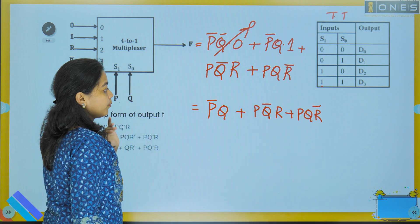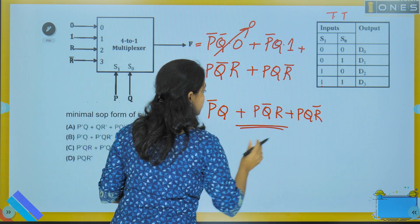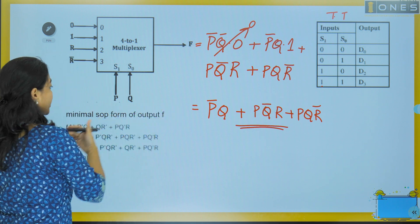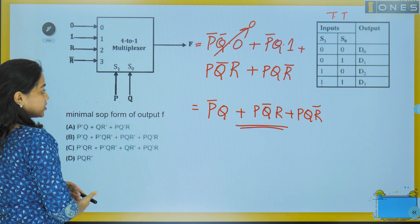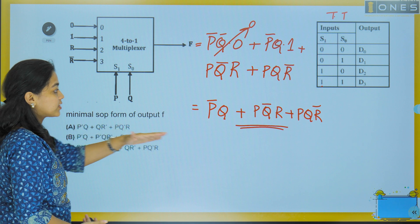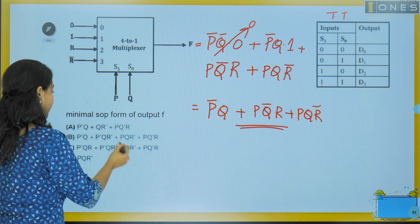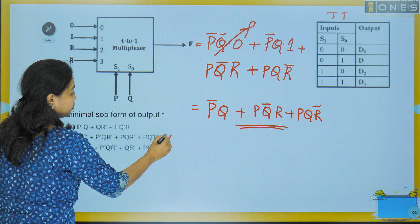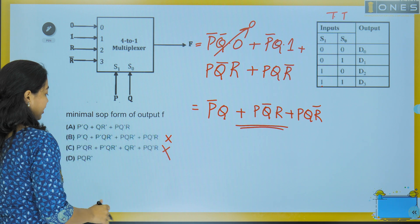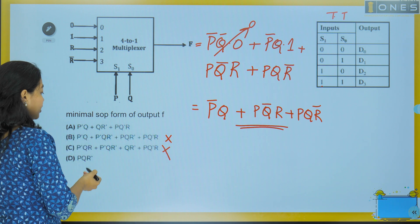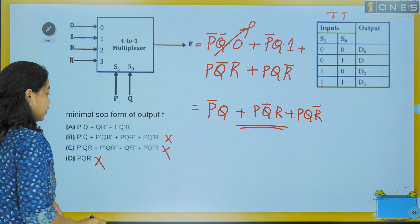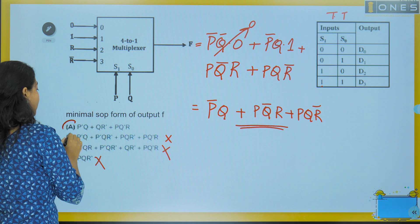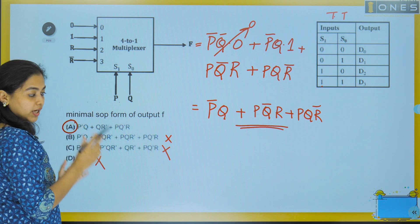Checking the options: options where three literals are not present can be ruled out. Options B, C, and the third are ruled out. The possibility is option A, which includes P̄·Q. This matches our expression, so option A is the candidate.